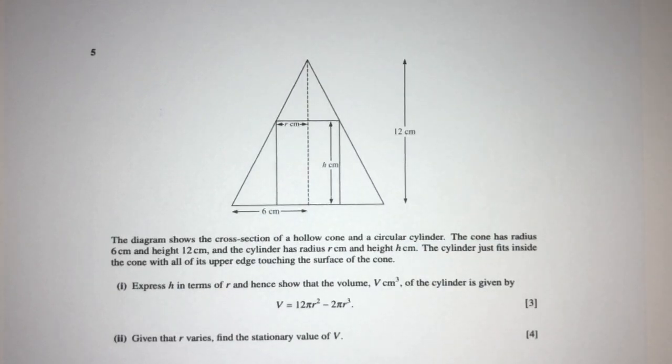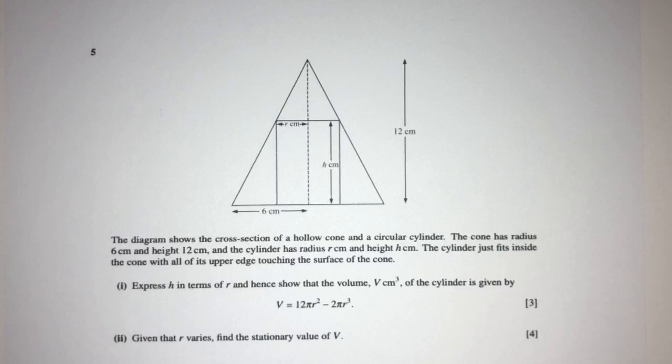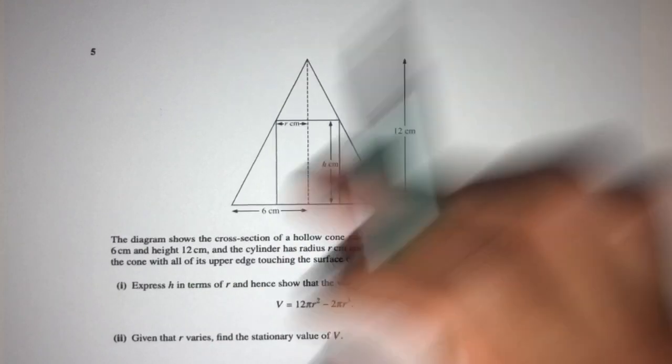The cone has radius 6 centimeters. This is the radius of the cone, 6 centimeters. And the height is 12. Height is 12, radius is 6.